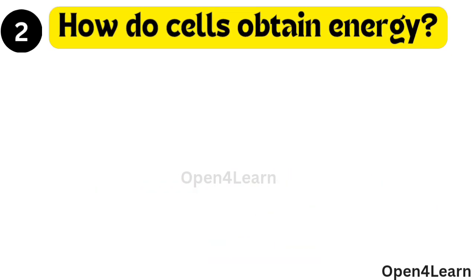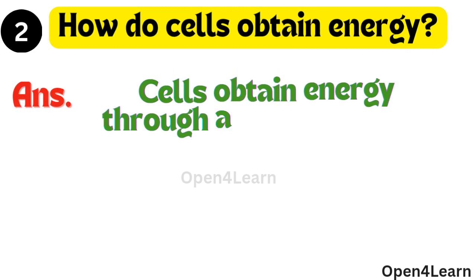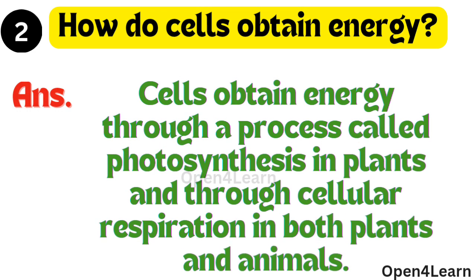Question, how do cells obtain energy? Answer, cells obtain energy through a process called photosynthesis in plants and through cellular respiration in both plants and animals.